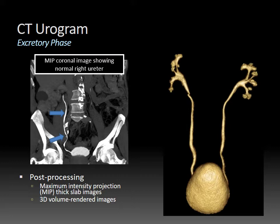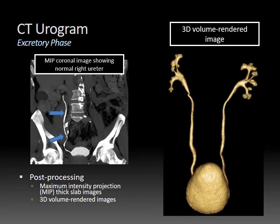Another technique is to generate 3D volume-rendered images, as in this case. This is a surface rendering of the collecting system, ureters, and bladder showing a normal patient. This is a great way to further characterize complex genitourinary anomalies like congenital anomalies.